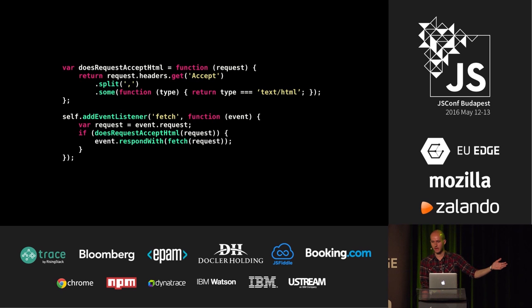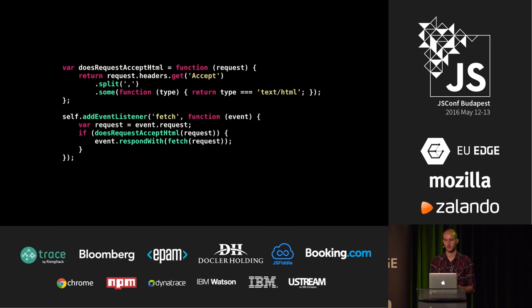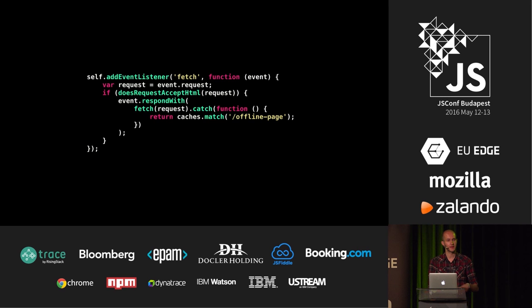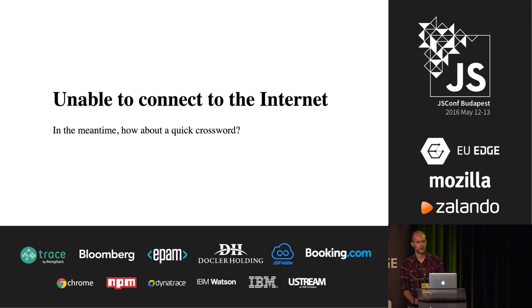This is the same fetch event you saw earlier, but now I'm only handling HTML requests by looking at the request accept header — I'll only handle the request if the browser accepts HTML. We do the fetch to the network, and if we're offline, fetch will return a rejected promise. We catch that promise rejection and retrieve the offline page from the cache. And now, if you're offline, you get the offline page — but something's missing: we're missing some styling and behaviour.